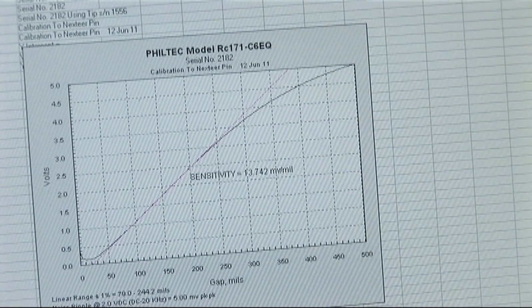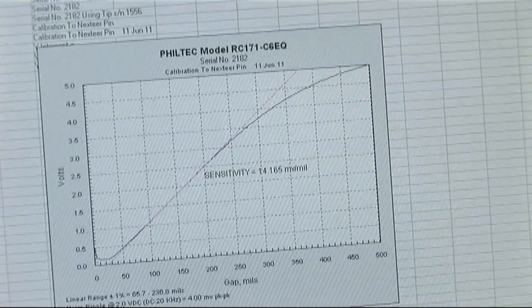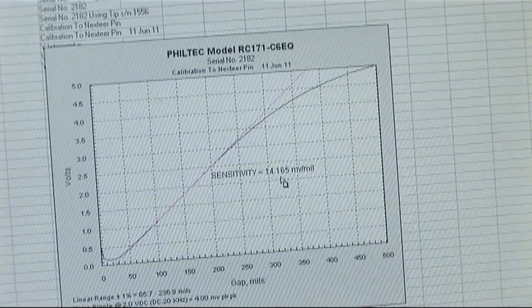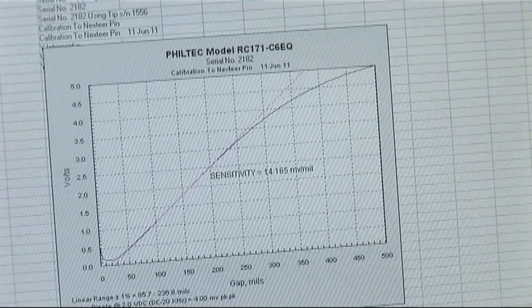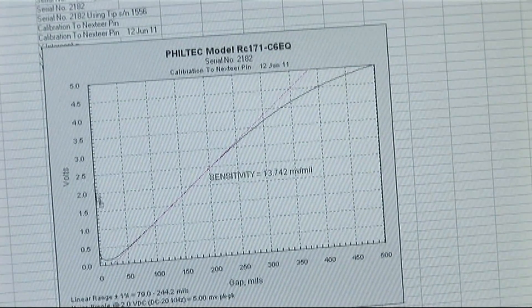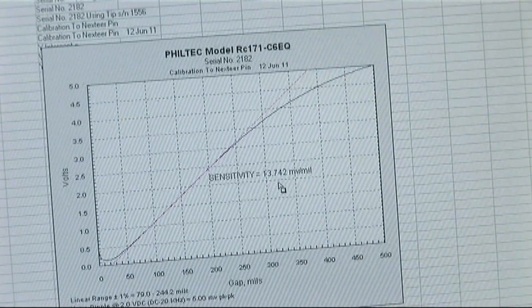All right. And once more, if we look at yesterday's calibration, sensitivity is 14.165 millivolts per mil. And if we paste in the calibration that we just did today, you could see a slight change, a little drop in sensitivity, 13.72.